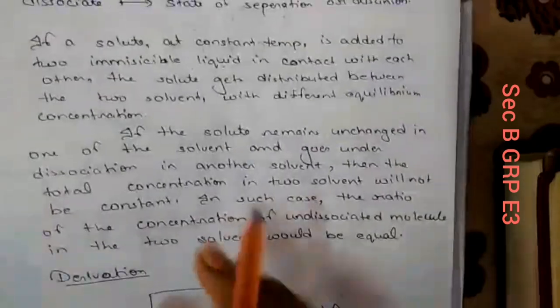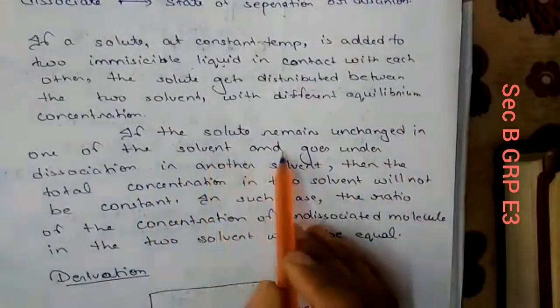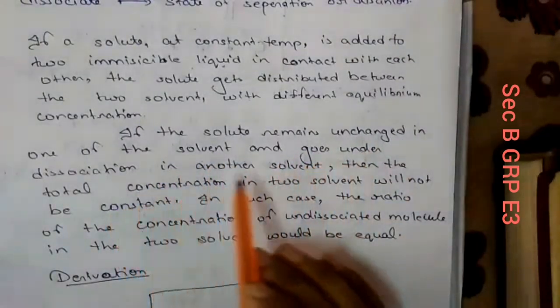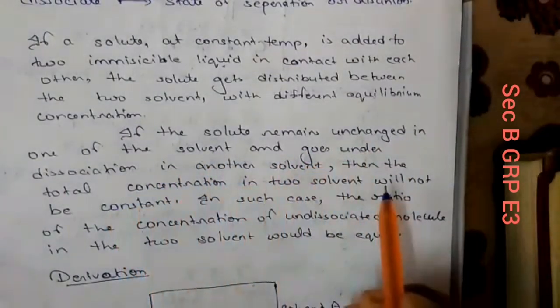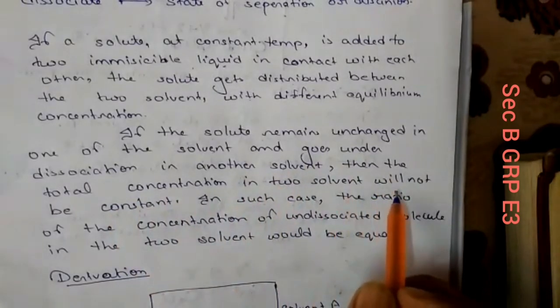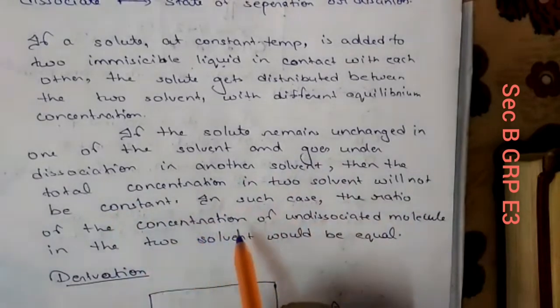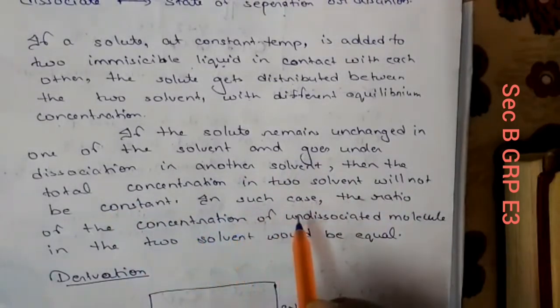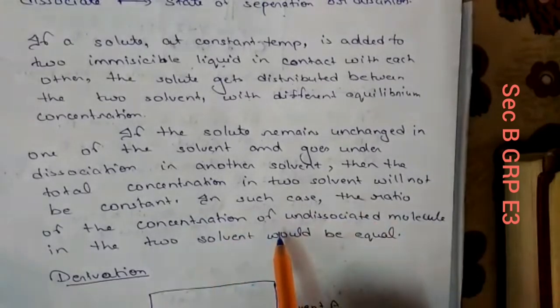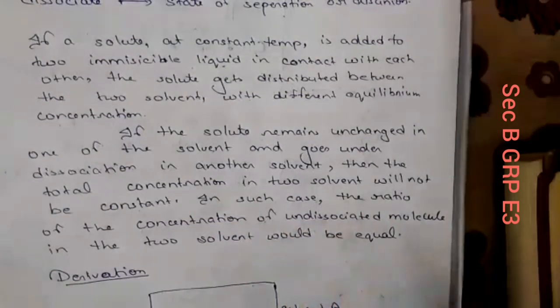If the solute remains unchanged in one of the solvents and undergoes dissociation in another solvent, then the total concentration of the solute will not be constant. Instead, in such cases, the ratio of the concentration of the undissociated molecules in the two solvents would be equal.